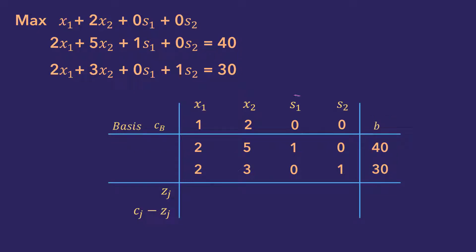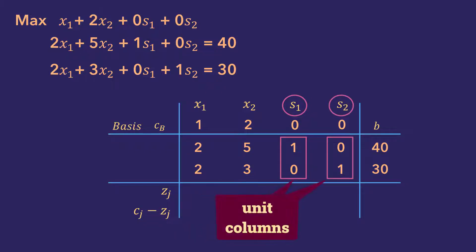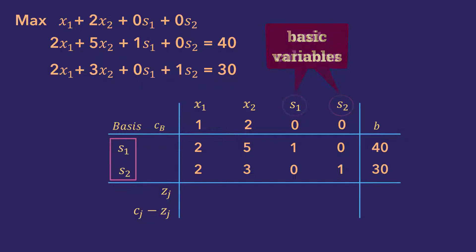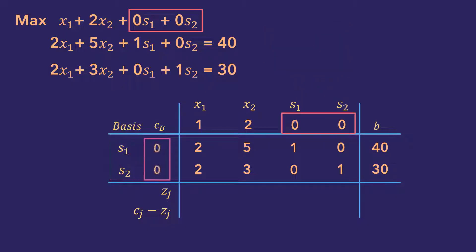Under s1, we have 1, 0. And under s2, we have 0, 1. These are called unit columns as they have a single plus 1 and other values being 0. The variables with unit columns are the basic variables, and we place them in the basis column here. Their coefficients in the objective function are placed in the cb column next to them.